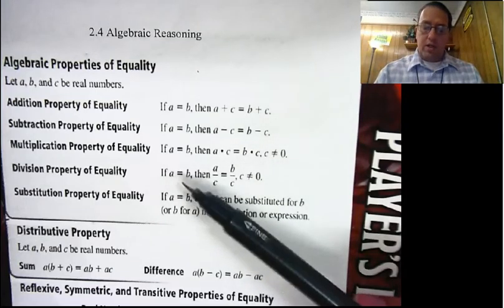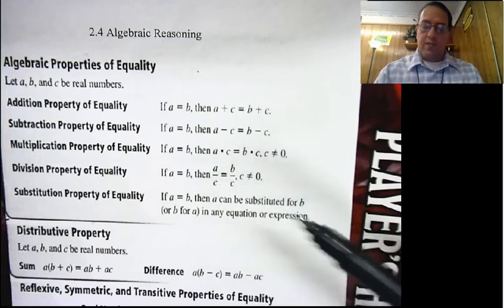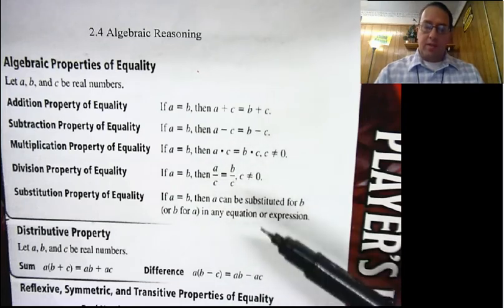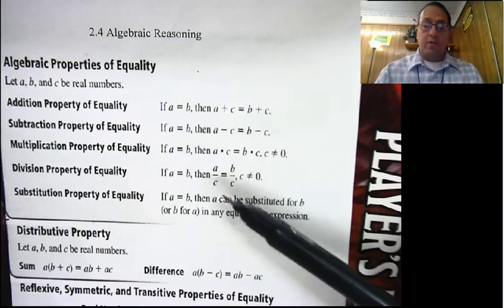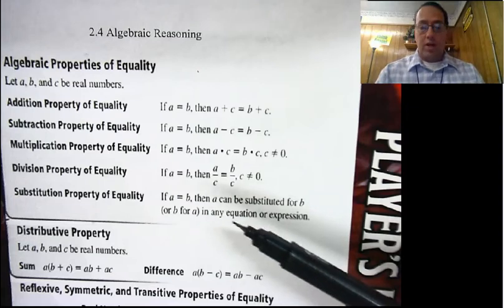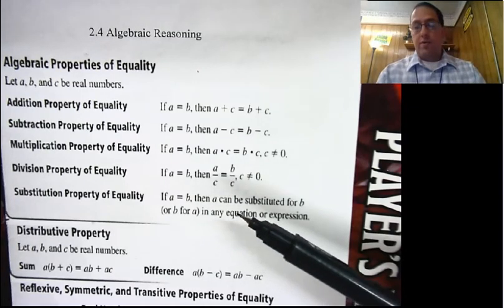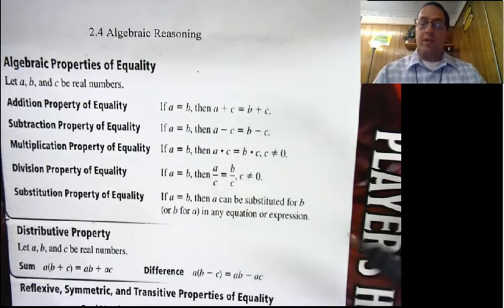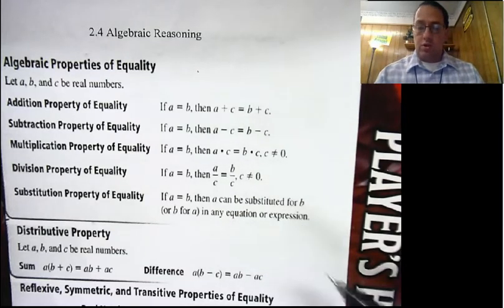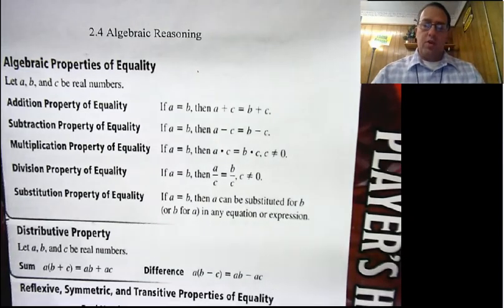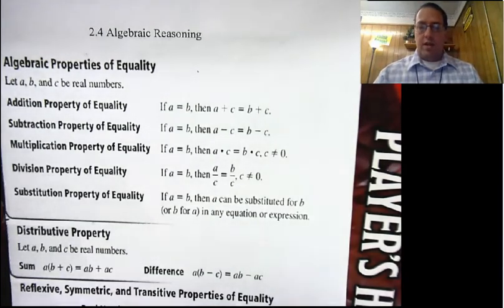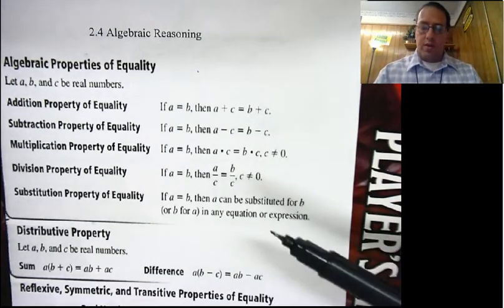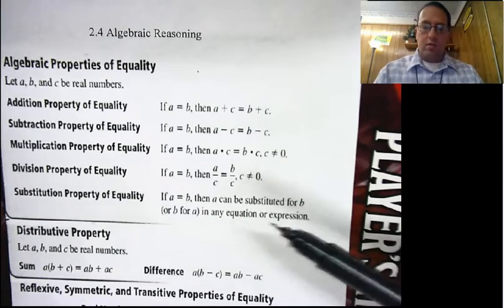Division property of equality: if a equals b, then a divided by c equals b divided by c. You can divide both sides by the same thing. For example, 2x equals 10 — divide both sides by 2 and you get x equals 5. Of course, c cannot equal 0, because you cannot divide by 0. It is undefined, it blows things up, the calculator will yell at you. Don't do it.